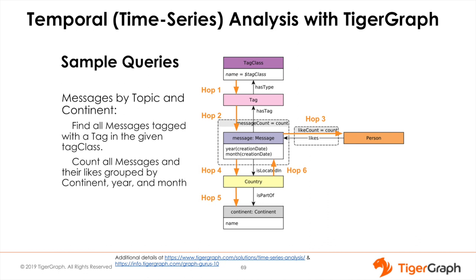The GSQL language and the TigerGraph platform include several features to help with temporal analysis. There are common functions such as extracting the year from a date. Unique to TigerGraph are accumulators — runtime variables specifically designed for aggregation with distributed parallel processing. For example, a query can analyze messages in parallel, with a set of accumulators keeping a real-time tally of how many messages are liked in each month. When this analysis window is needed on a regular basis, we can even create a time-based index to speed up searching and sorting. Incidentally, the query example here is a six-hop query, another example of deep link analytics.